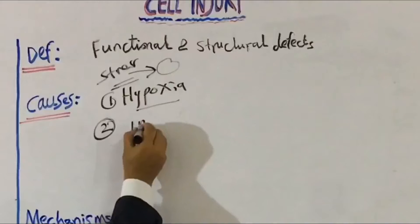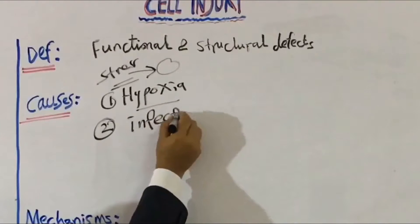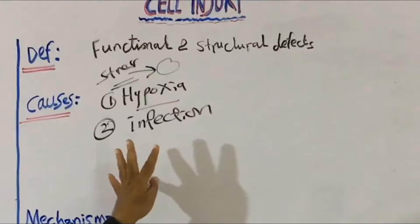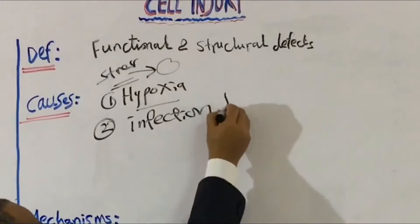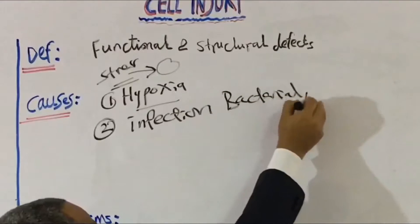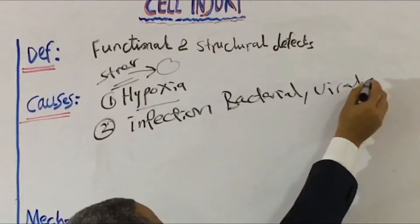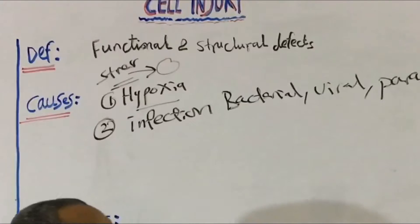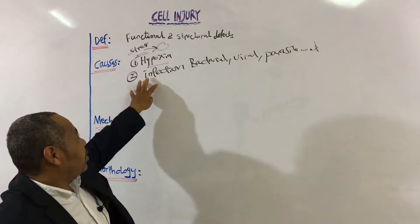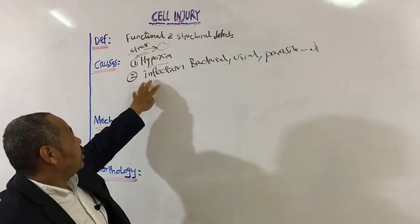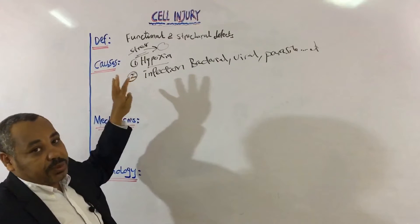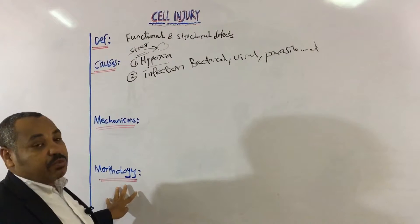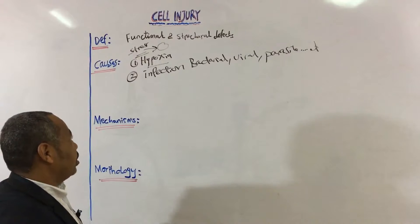Number two is infection. Infection is an important cause of stress to the cell, whether bacterial, viral, parasitic, fungal, or any other microorganism. Whatever the infection is, the stress may be mild, moderate, or severe, and according to the degree and duration it will produce morphological changes, which we will discuss later.